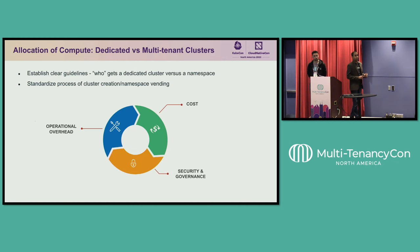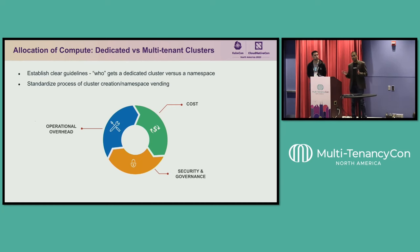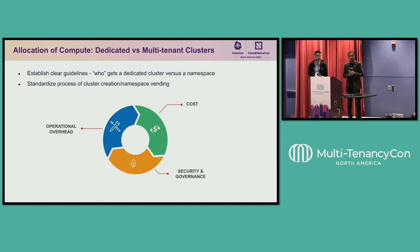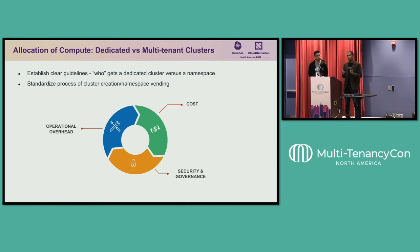First things first, what we've seen customers do — and this is very critical for success. You need to establish clear guidelines in terms of who gets a dedicated cluster versus a namespace or a bunch of namespaces. The pattern we see increasingly is that by default, application teams get namespaces, and only if certain conditions are met, a dedicated cluster is spun up. This helps with cluster sprawl, reduces cost spend, but also adds unique challenges in terms of security and governance. We'll be focusing on the infrastructure piece, the things that platform teams mostly care about.